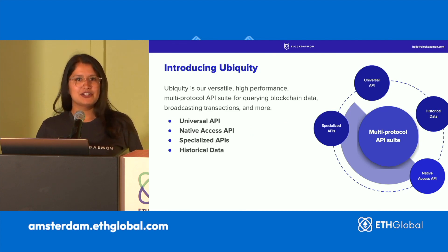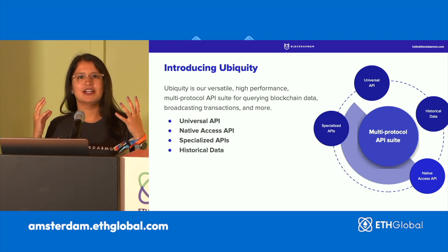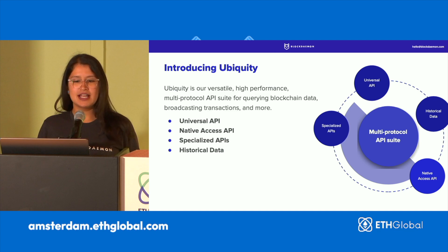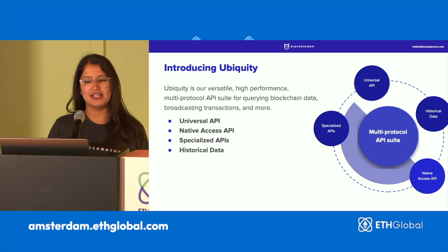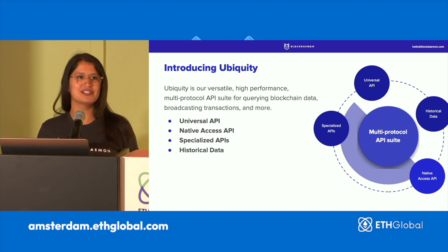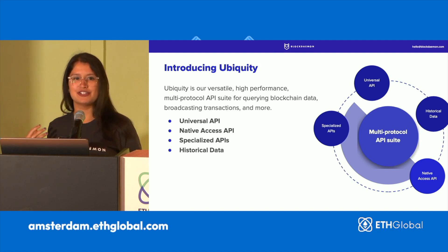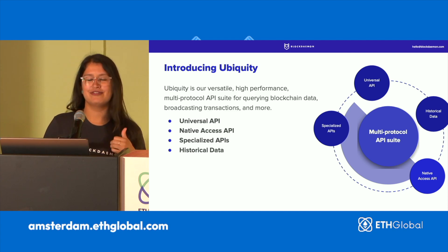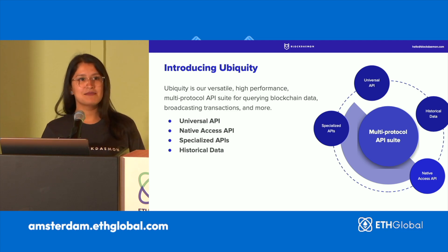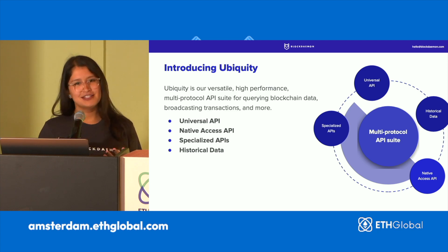Ubiquity is essentially a bunch of APIs that fall under a singular umbrella that we call Ubiquity. It's versatile, it's high performance, it's multi-protocol, and it's an API suite that helps us query all sorts of blockchain data. You can broadcast transactions, you can search for history, and all sorts of exciting things. The four main pillars of our Ubiquity API are the universal API, the native access API, the specialized APIs, and historical data.